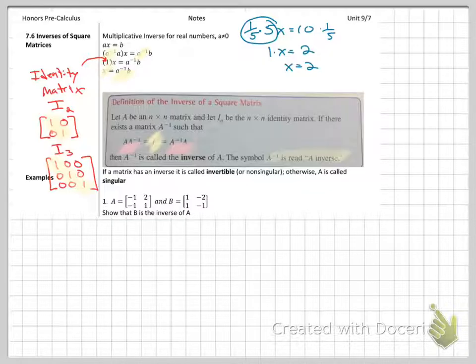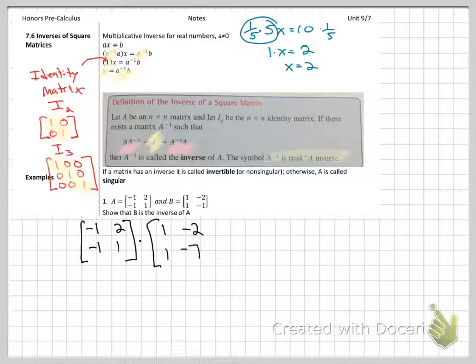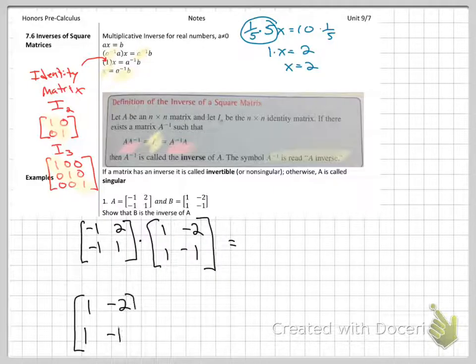So for number one, when they say show that A and B is the inverse of A, however you want to say it, you need to take A and multiply it by B. If it is the inverse, you should get that identity matrix, and then later, wherever you have space, you need to do B first, and multiply it times A.